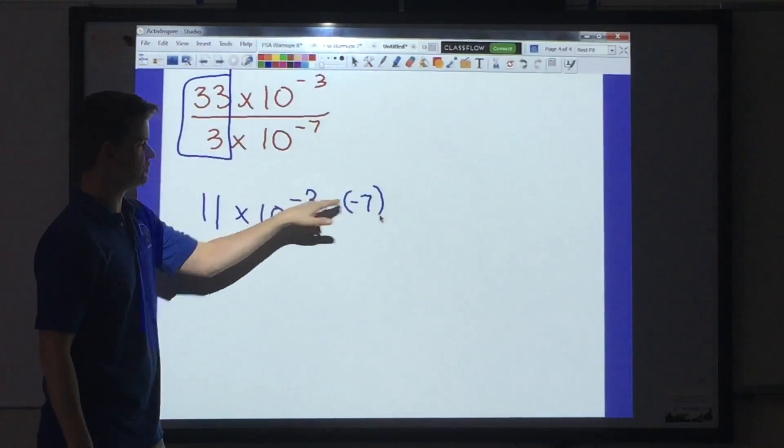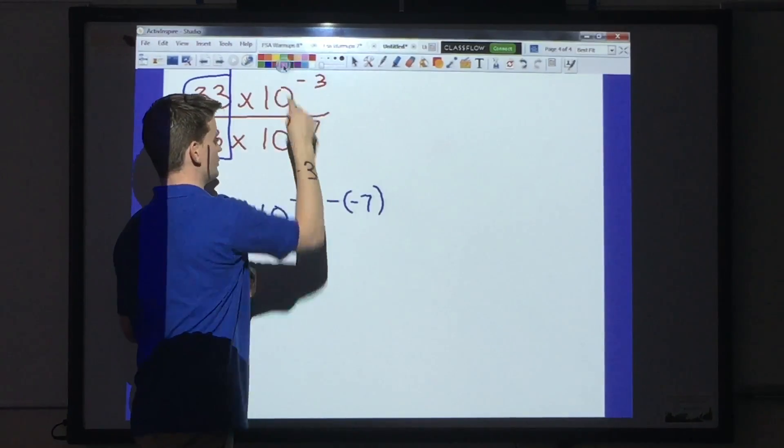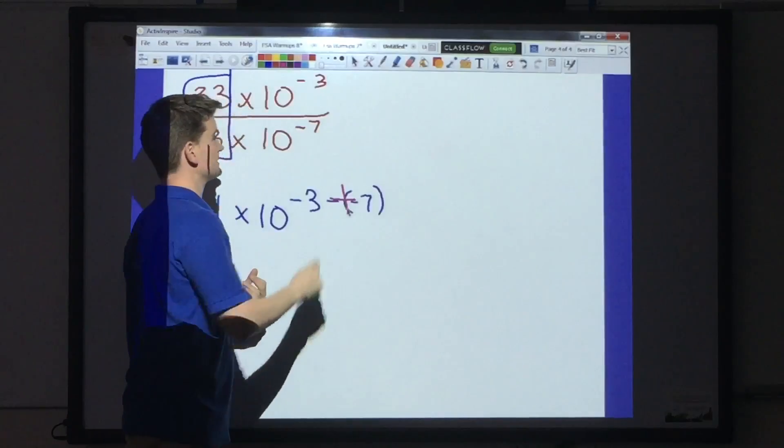Now, when you have two negatives next to each other like this, it becomes addition. So, this is going to turn into a plus sign.